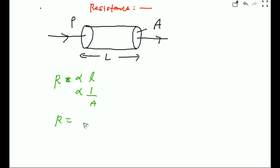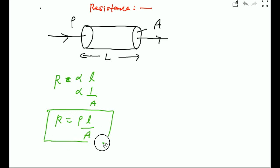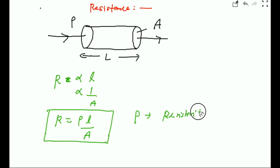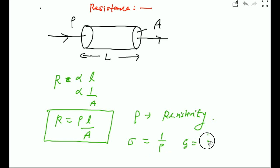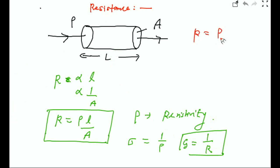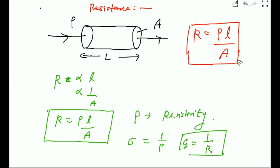So you can write R equals constant times l by A. This is the basic formula for resistance of the conductor, where this constant is called resistivity. Resistivity depends on the material as well as the temperature. The relation between conductivity and resistivity is reciprocal. We can write conductance G equals 1 by R. So the basic formula for resistance is R equals rho times l by A.